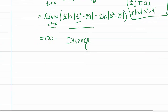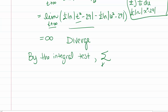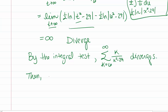Now we write the conclusion. By the integral test, the sum going from 6 to infinity of k over k squared minus 29 also diverges. And because we know that if the tail diverges the series diverges, the sum k starting at 5 to infinity of k over k squared minus 29 also diverges.